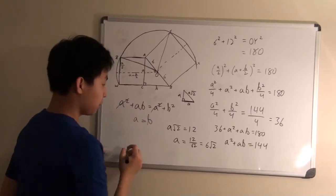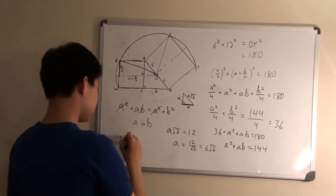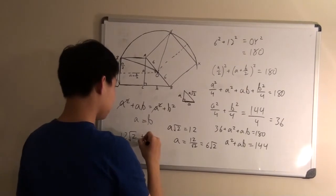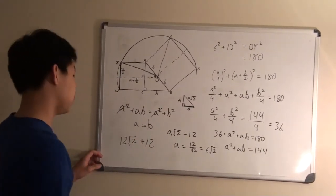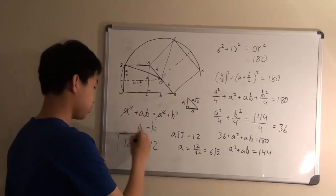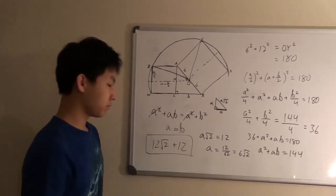So we multiply that by 2 for each of the two legs. So 12 root 2 plus 12. And this would be the perimeter of the triangle, which would also be our final answer.